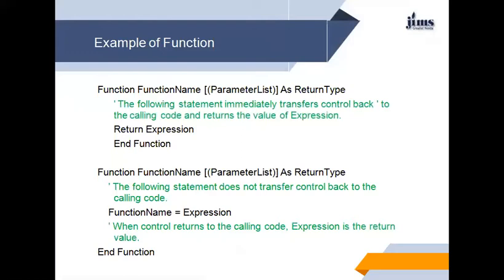Here are some examples. You can see function, function name, parameter list, as return type — this is the general syntax. In the following statement, it immediately transfers control back to the calling code and returns the value of the expression using Return. This is the end function. In another form, the function name, parameter list, and return type are defined, followed by statements that do not immediately transfer control back. When control returns to the calling code, the expression is the return value.